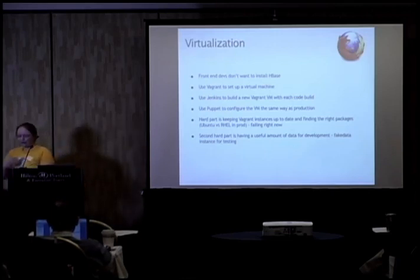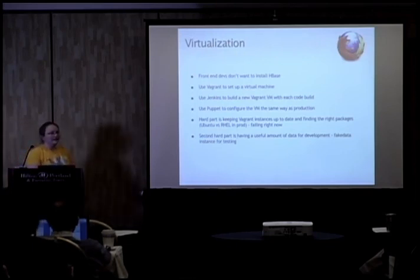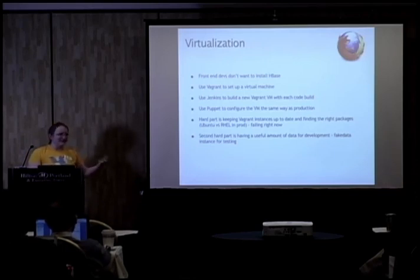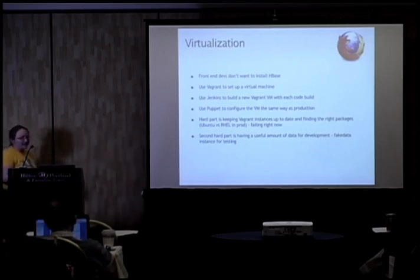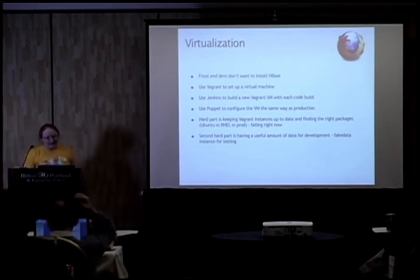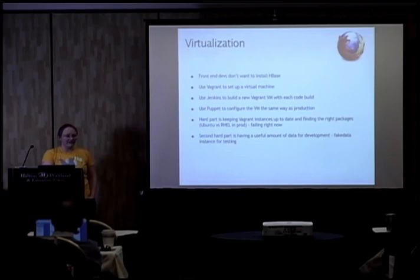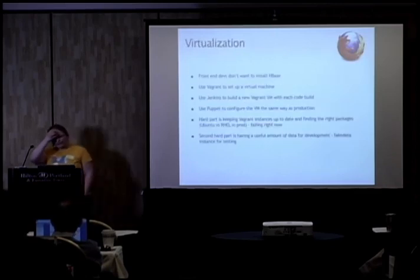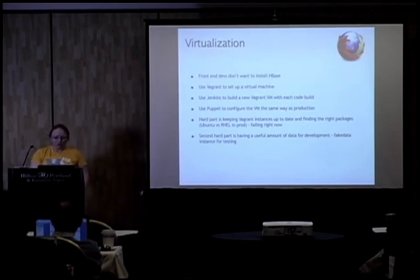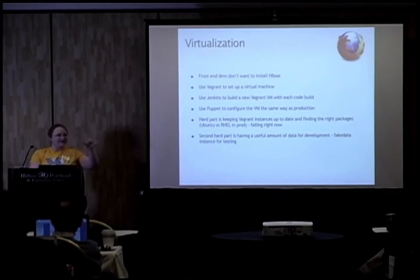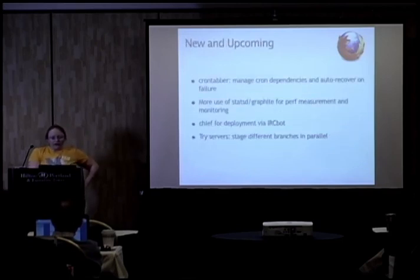The hard part with Vagrant is finding the right packages — sometimes HBase and Postgres packages become unavailable and you end up making your own. Also, the VirtualBox base box is Ubuntu whereas in production we run Red Hat. The other challenge is having useful development data. Our data includes personally identifiable information — we know what website you were on when you crashed, and memory contents could contain passwords or credit card numbers. We do have a fake data instance and scripts for generating fake crashes now, and that's helped a lot.